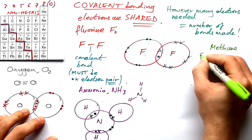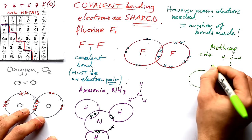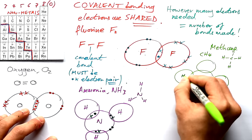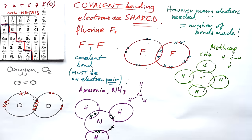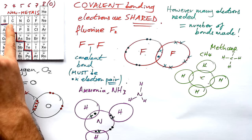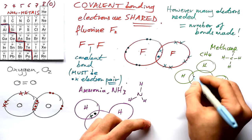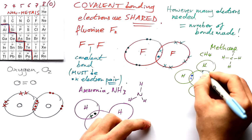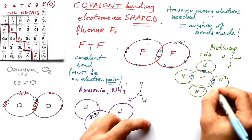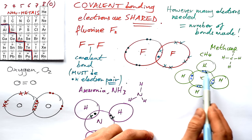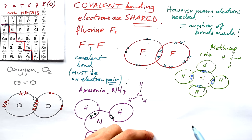Let's try methane, CH4. Carbon in the middle with four hydrogens around the outside. Carbon is in group four, so it needs to make four bonds. Each bond has a dot-cross electron pair. The hydrogens are happy — they've each got two electrons. Carbon itself has four of its own plus four shared from the hydrogens, giving a full outer shell of eight.